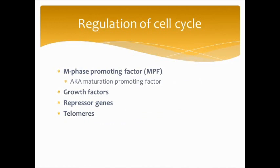There is a lot of regulation of the cell cycle. One important factor is the M phase promoting factor, or MPF, also known as maturation promoting factor — it promotes mitotic division when present. Growth factors also promote mitotic division; repressor genes repress it. Telomeres are at the ends of chromosomes and shorten every time cell division happens. There is a point at which they cannot shorten anymore and the cell stops dividing. This has implications for aging — as cells stop dividing and can no longer replace themselves, tissues become more brittle and less able to sustain trauma. Older people tend to have less elastic skin and bruise more easily because of this.